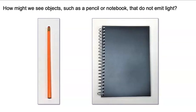How might we see objects such as a pencil or notebook that do not emit light? Well we can't see objects such as pencils or notebooks in the dark. So I know we need light to see them. But objects such as pencils and notebooks block light. Let's investigate how a light ray can help someone see an object that does not emit light.